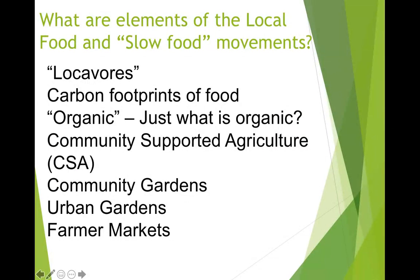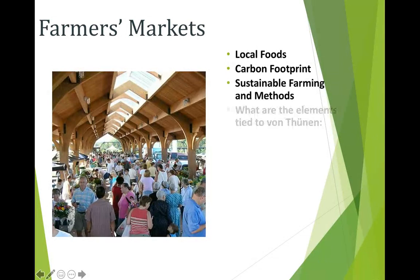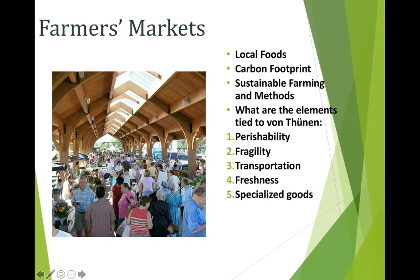We also see local food and slow food movements growing. People with a smaller carbon footprint want to eat organic or locally and support local business and agriculture rather than eating food from all over. We see this idea of CSAs — community supported agriculture — community gardens, urban gardens, and farmers markets. Farmers markets have been on the rise, tied to the local food movement, with smaller carbon footprints and sustainable farming methods. The food tends to be perishable and fragile, transported quickly to farmers markets — sometimes harvested that very morning. They often have specialized goods, and people frequent these markets specifically in urban settings to get the fresh food they need.